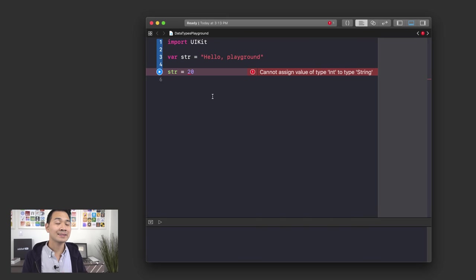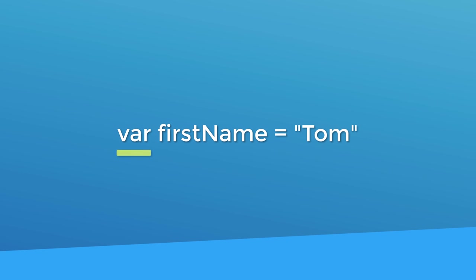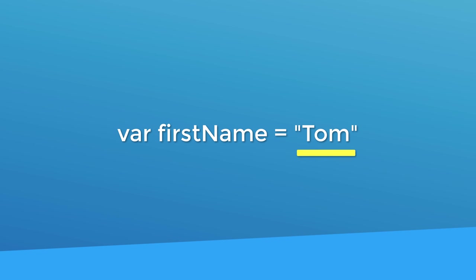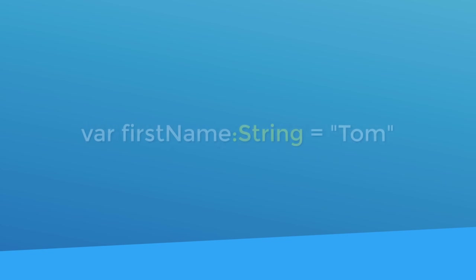I want to focus on the practical side of data types — in terms of declaring variables and constants, how you would specify the data type for your variable or constant. In the last lesson, you learned that to declare a variable you use the var keyword followed by the variable name, and for constants you use the let keyword, then the assignment operator — the equal sign — to assign data. One thing I left out was an optional part of this declaration: after your variable or constant name, you can put a colon followed by the data type you expect this variable or constant to keep track of.